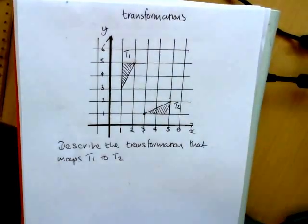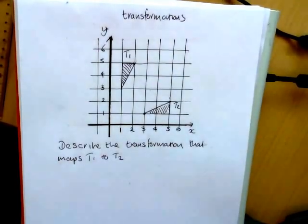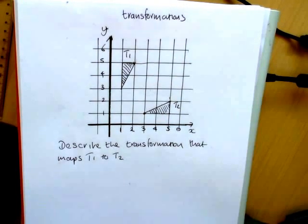Now this is a particular transformation that a lot of people go wrong with. The question says describe the transformation that maps T1 to T2.